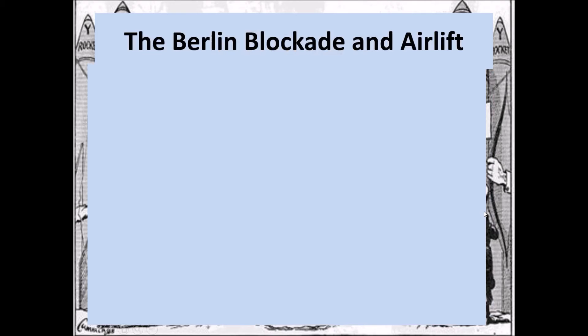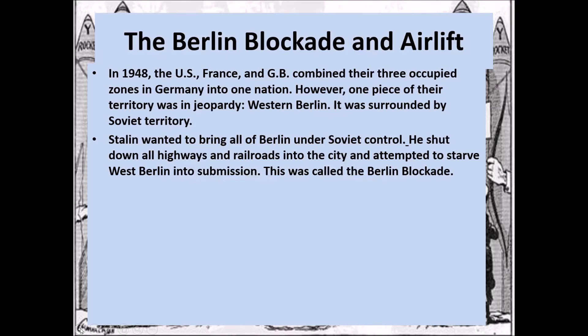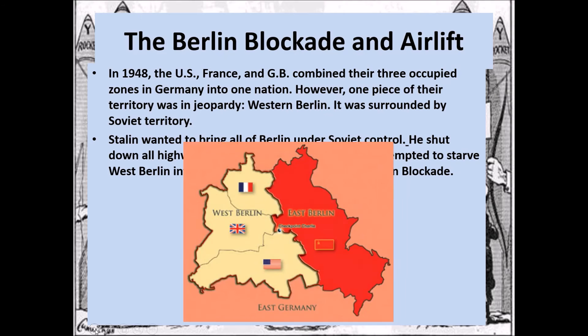So when did words actually become actions? This happened at the Berlin Blockade. In 1948, the U.S., France, and Great Britain combined their three occupied zones of Germany into one nation — Western Germany. But one piece of their territory was in jeopardy: West Berlin, which was surrounded by Soviet territory. Stalin wanted to bring all of West Berlin under Soviet control, so he shut down all highways and railroads into the city and attempted to starve West Berlin into submission.